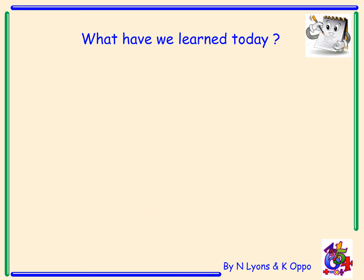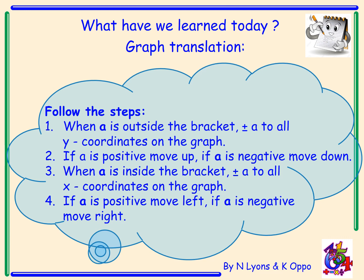So what have we learned today? We've learned about graph translations. When a is outside the bracket, plus or minus a to all y-coordinates. If a is positive, it would move up, and if a is negative, it would move the graph down. When a is inside the bracket, plus or minus a to all of the x-coordinates on the graph. So inside the bracket next to the x, it will move the graph horizontally. If a is positive, that will move the graph left, and if a is negative, it will move the graph right.